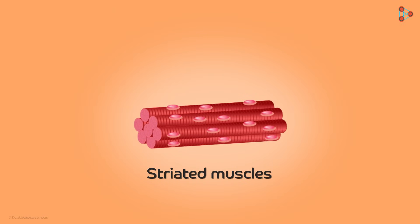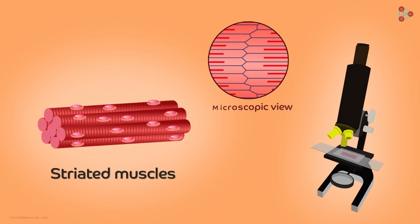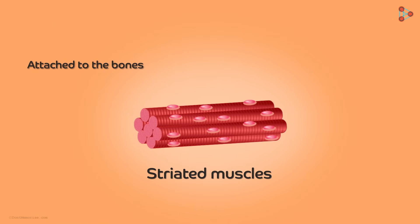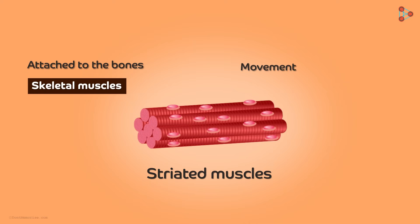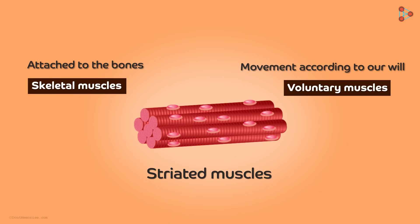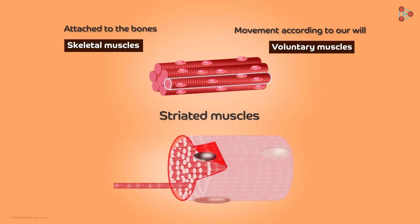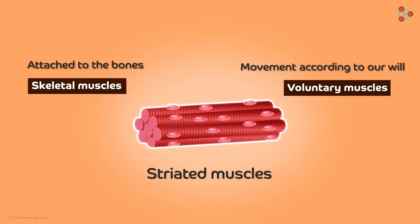The first type is called striated muscles. As the name suggests, striated means when we stain this tissue and observe it under the microscope, it exhibits striations in the form of alternate light and dark bands. We find these striated muscles attached to the bones, hence they are also named skeletal muscles. Since they help in movement of our hands and legs along with locomotion, their action is carried out according to our will — that is why we also call them voluntary muscles. They have a typical cylindrical structure due to wrapping of long muscle fibres together, and are usually unbranched and multi-nucleate in nature.